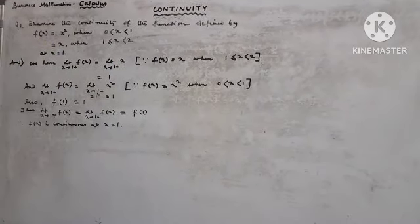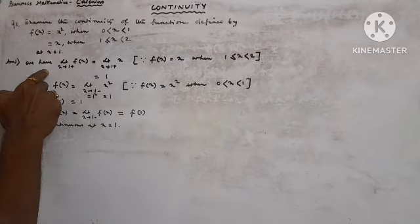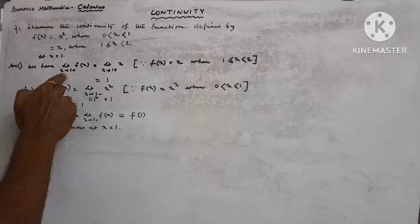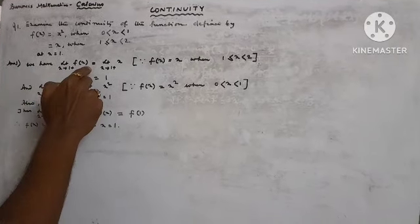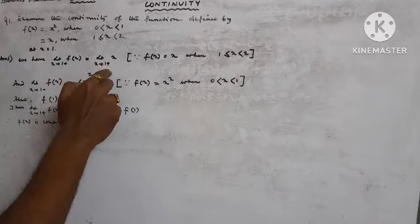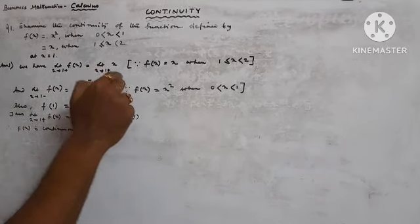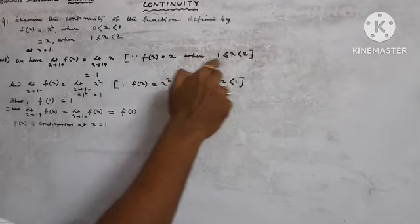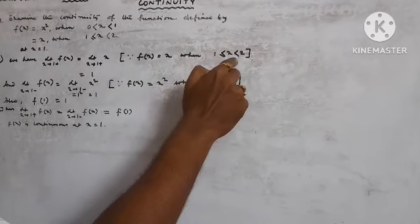At x = 1, we have limit f(x) as x tends to 1 plus equals limit x tends to 1 plus, it will be x, since f(x) = x when 1 ≤ x < 2.